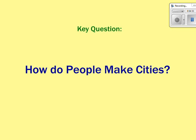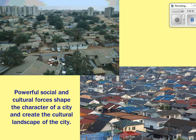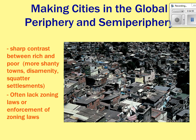One of the last main ideas is how people make cities. It depends on the economic and political makeup — you can tell a lot about the social and political forces by looking at a city's landscape. In peripheral and semi-peripheral cities, we've talked about shantytowns and the disamenity sector.